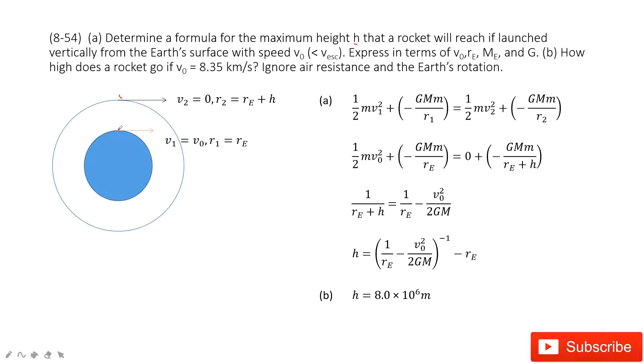First at position one, the rocket is on the surface of the Earth. The initial velocity is V0, and the initial distance is Re. Then the rocket reaches the peak. The velocity is zero, and R is Re plus h, because this part is h.